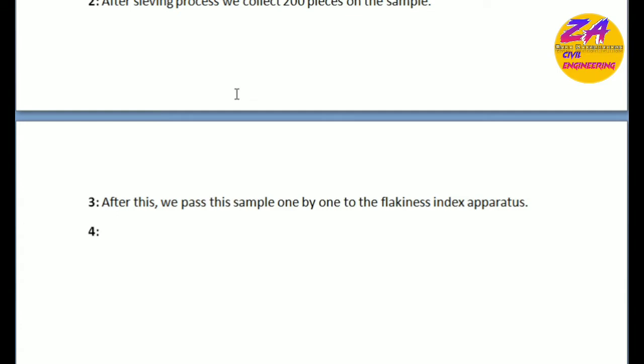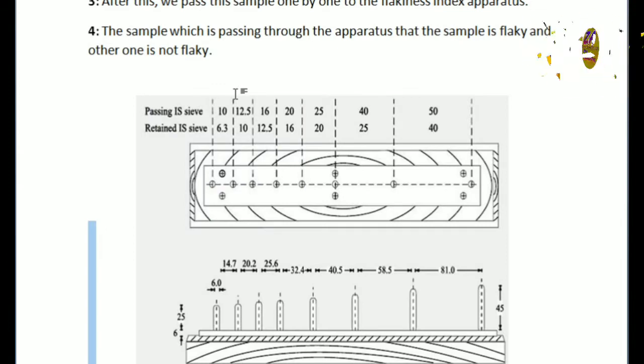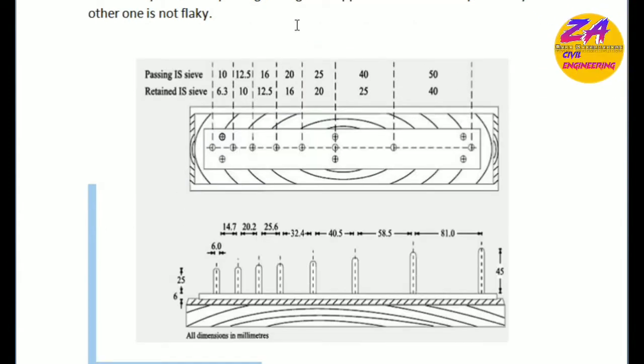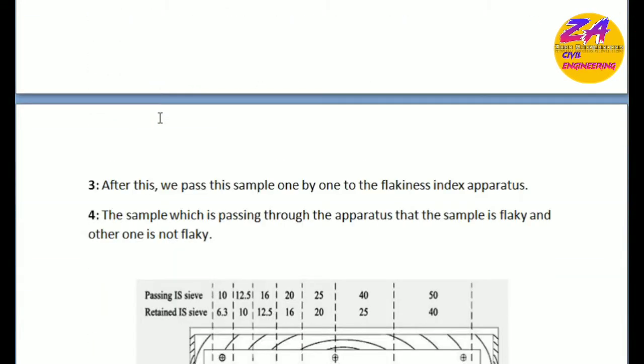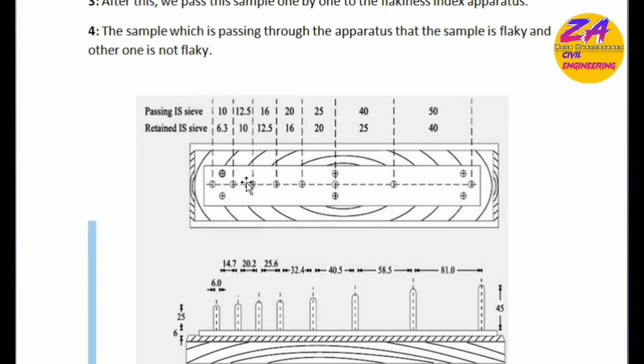Third step: after this we pass this sample one by one through the flakiness index apparatus. The sample which is passing through the apparatus, that sample is flaky and other one is not flaky.